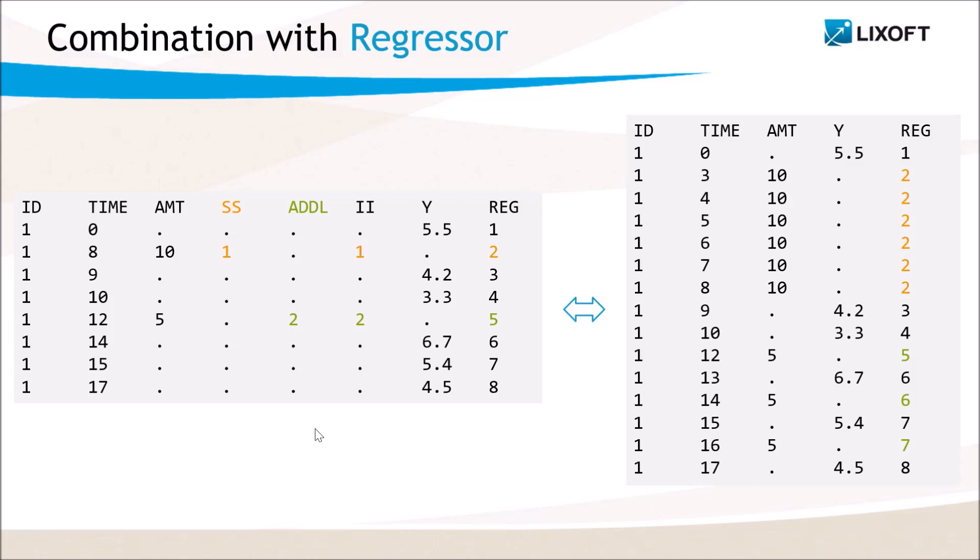It is important to note that the interpolation of regressor values is different when using additional doses or steady state columns. On this example dataset, doses have been added with the column steady state and with the column additional doses, and the column reg is used as a regressor.